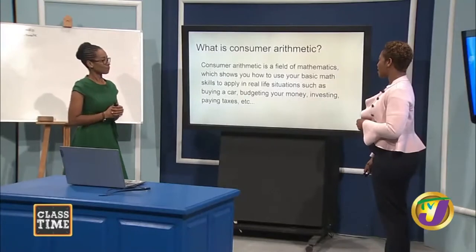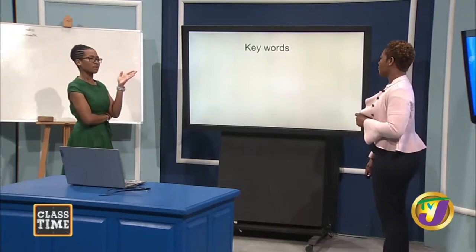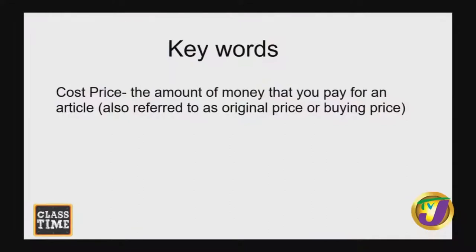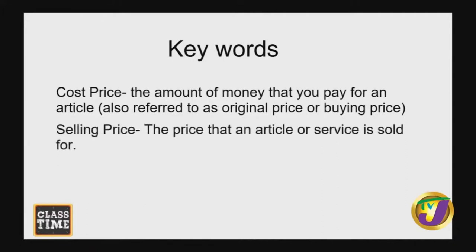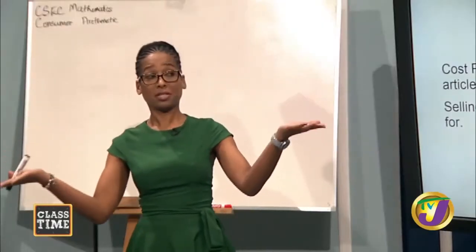Let us look at some key terms in consumer arithmetic. We have cost price — the amount of money that you pay for an article or services, also referred to as original price or the buying price. And if we have cost price, we must have selling price — the price that an article or service is sold for.